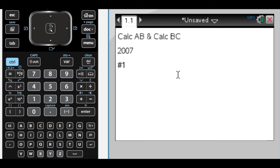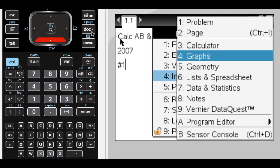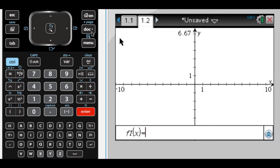Alright, this is going to be number one from the 2007 Calculus AB and BC exams. And it's a little unusual in that it's an area and volume question, and they didn't give you the graph. They gave you the functions, obviously, but not the graph. So let's graph them.